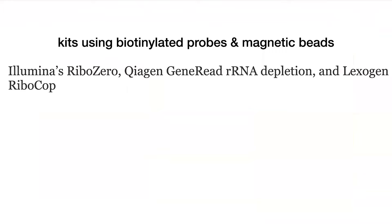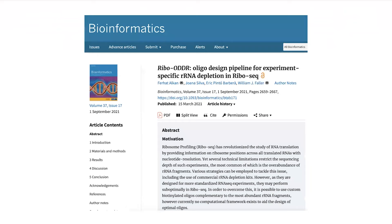Some kits that use this biotinylated probe method include Illumina's RiboZero, Qiagen's GeneRead rRNA Depletion Kit, and Lexogen's RiboCop. There are also custom strategies — if you're working with a less common species where no kit is available, you can design your own probes based on the rRNA sequences from that species.